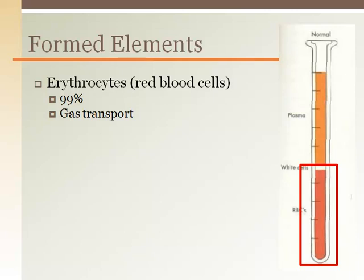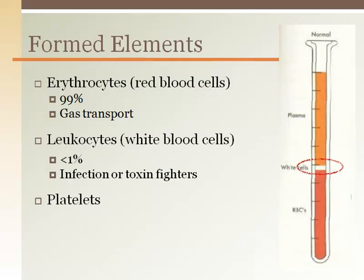The formed elements are almost all made in the bone marrow. They are cells or fragments of cells. Erythrocytes are the red blood cells and they make up most of the formed elements. Platelets and leukocytes, or white blood cells, are less than 1% of the blood.